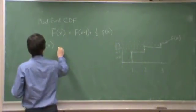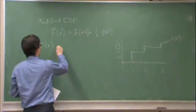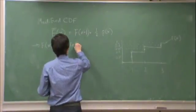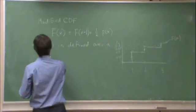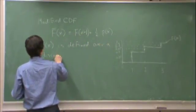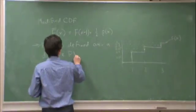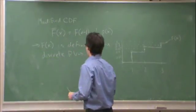So, f of x is defined over a discrete random variable, and therefore, what we have are...